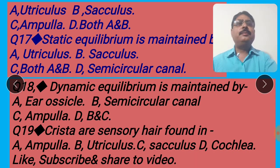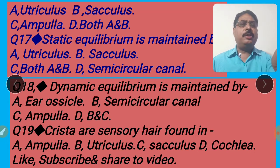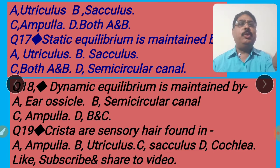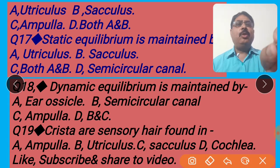Next question, 17: Static equilibrium is maintained by — utriculus; sacculus; both A and B; semicircular canal. Static equilibrium is maintained by utriculus and sacculus. Utriculus and sacculus contain sensory hairs called maculae with crystalline particles called otoliths or otoconia, which contain calcium carbonate. These sensory hairs take part in static equilibrium. So the right answer is option C — both A and B are right. I shall click option C for the right answer.